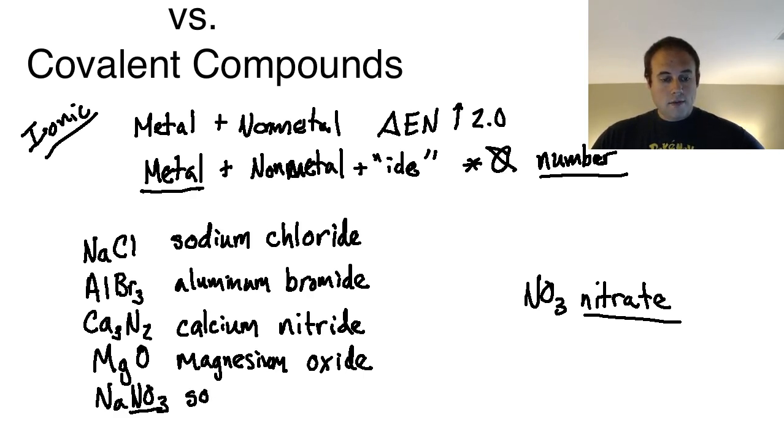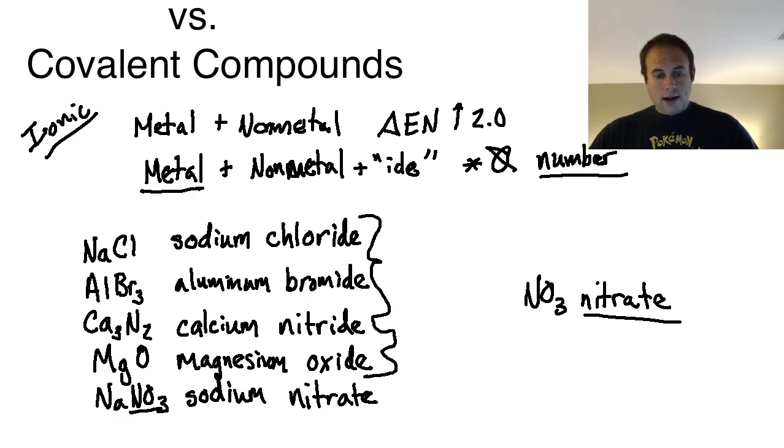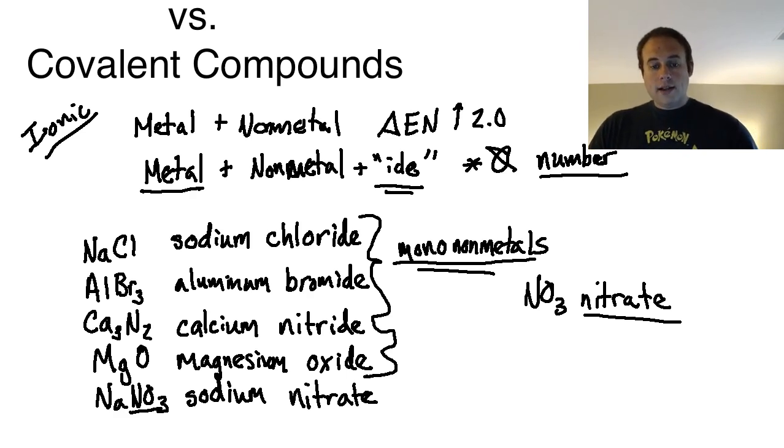When you have a polyatomic anion, you just list it as the polyatomic anion. So NO3 is a nitrate, this would be referred to as sodium nitrate. That's important because if you look, when I had Cl, Br, and all of the rest of these, all of these were mono nonmetals. What I mean by mono: I may have had more of them—for instance when I had three bromines in aluminum bromide—but what I mean is all I had was bromine. I didn't have nitrogen and oxygen or bromine and chlorine; it was just one nonmetal that I was utilizing there.